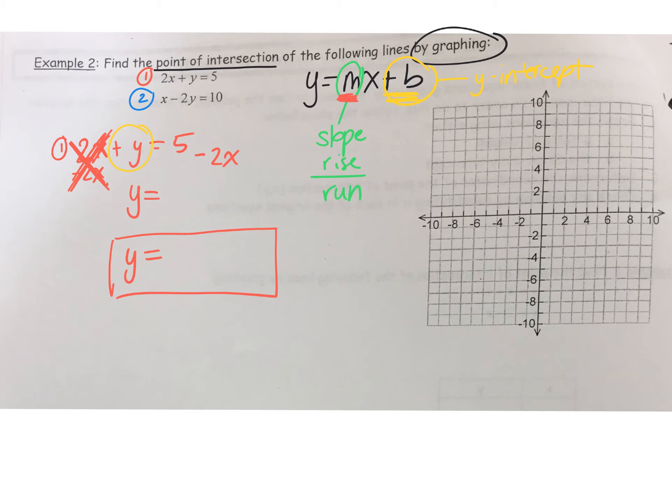I'm just left with y. And I have on the right side 5 take away 2x. Is that it? I've isolated y. Slope intercept form means you need to isolate y. I can rewrite this. I can put y equals 5 take away 2x, or I can write y equals negative 2x plus 5. Does it matter which order we write it in? No.